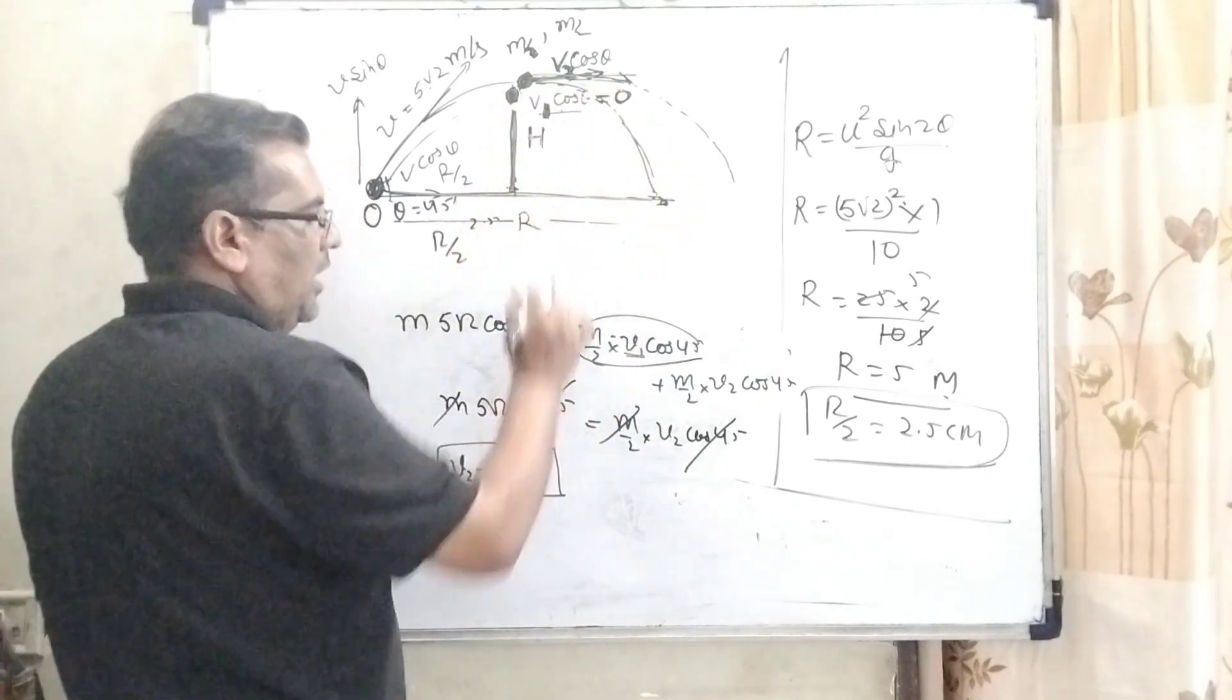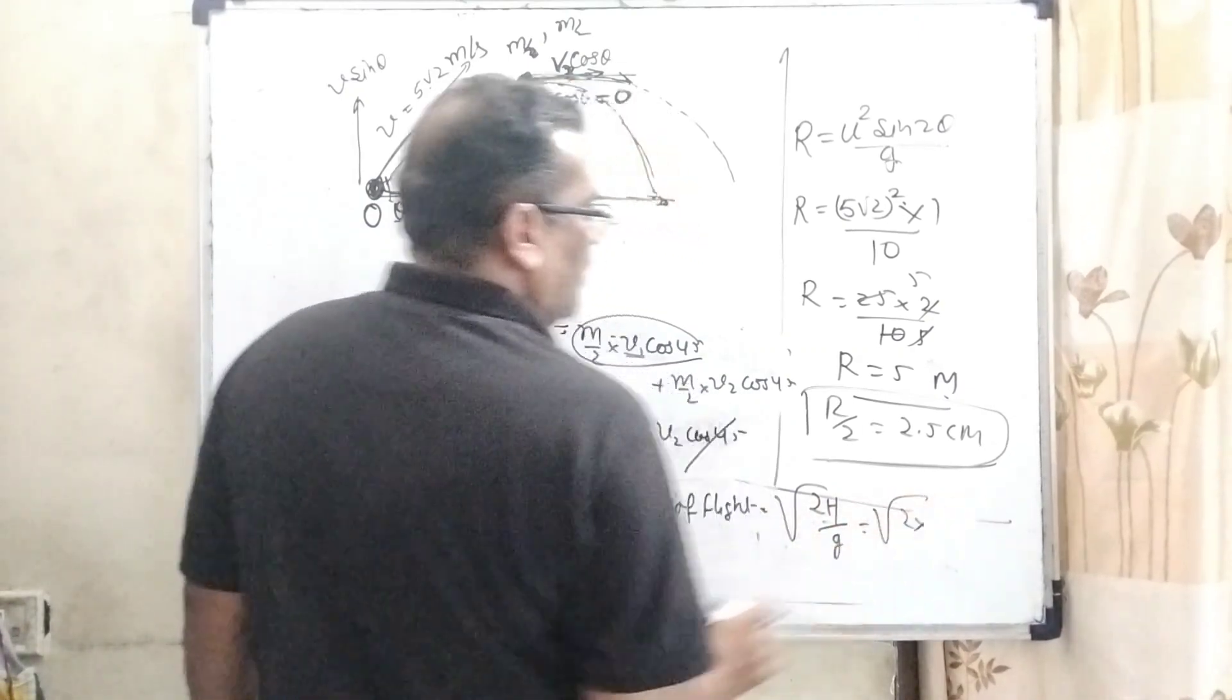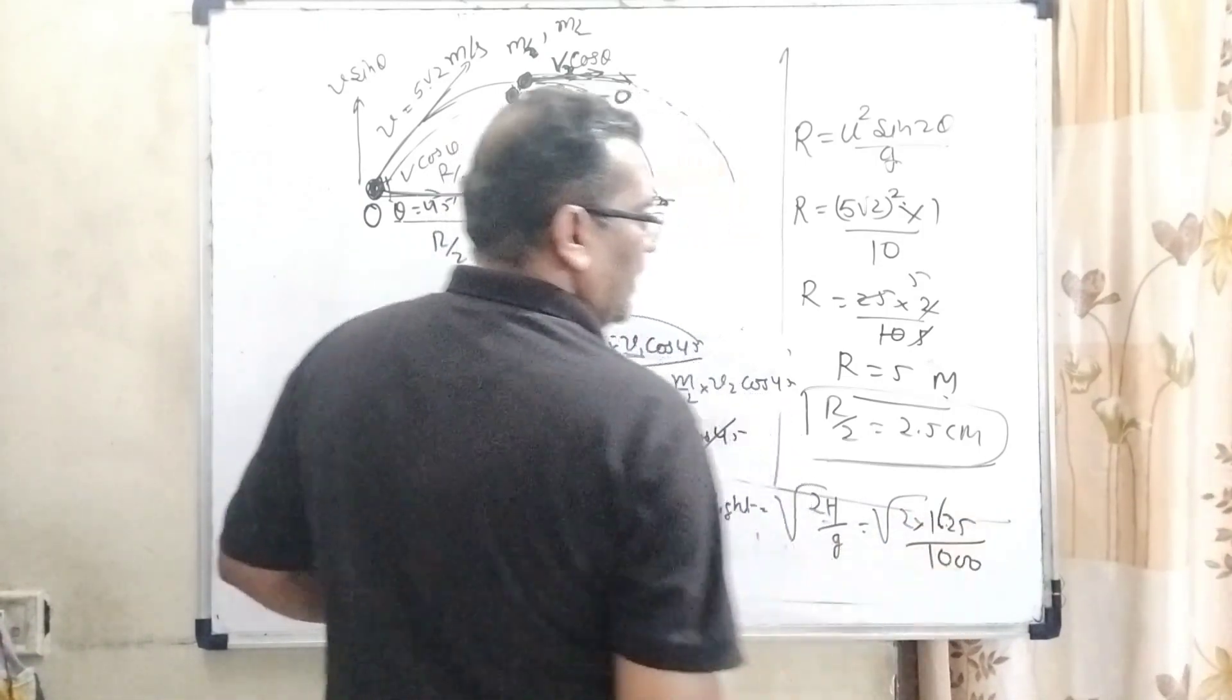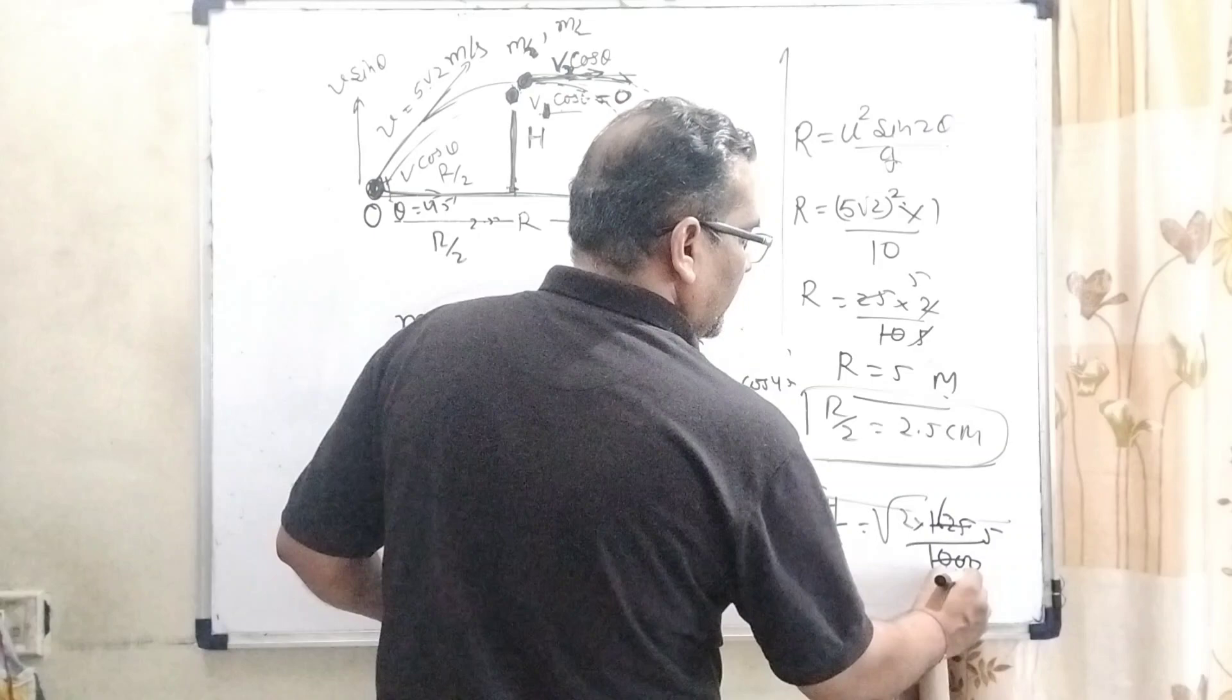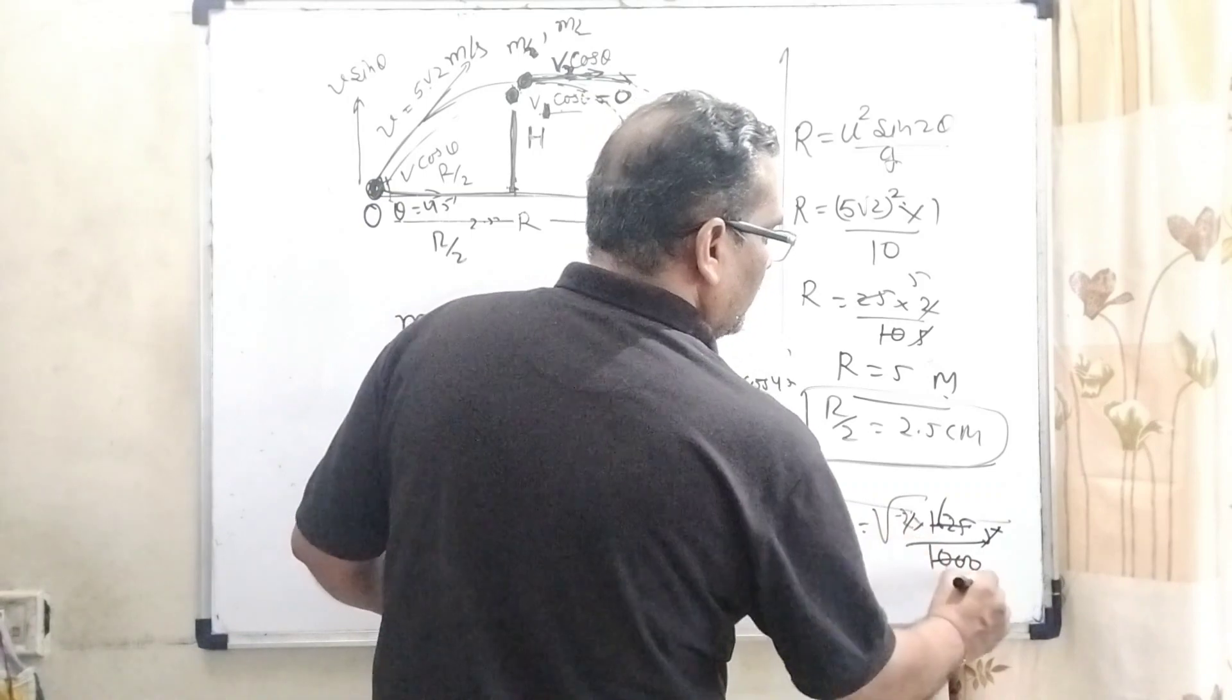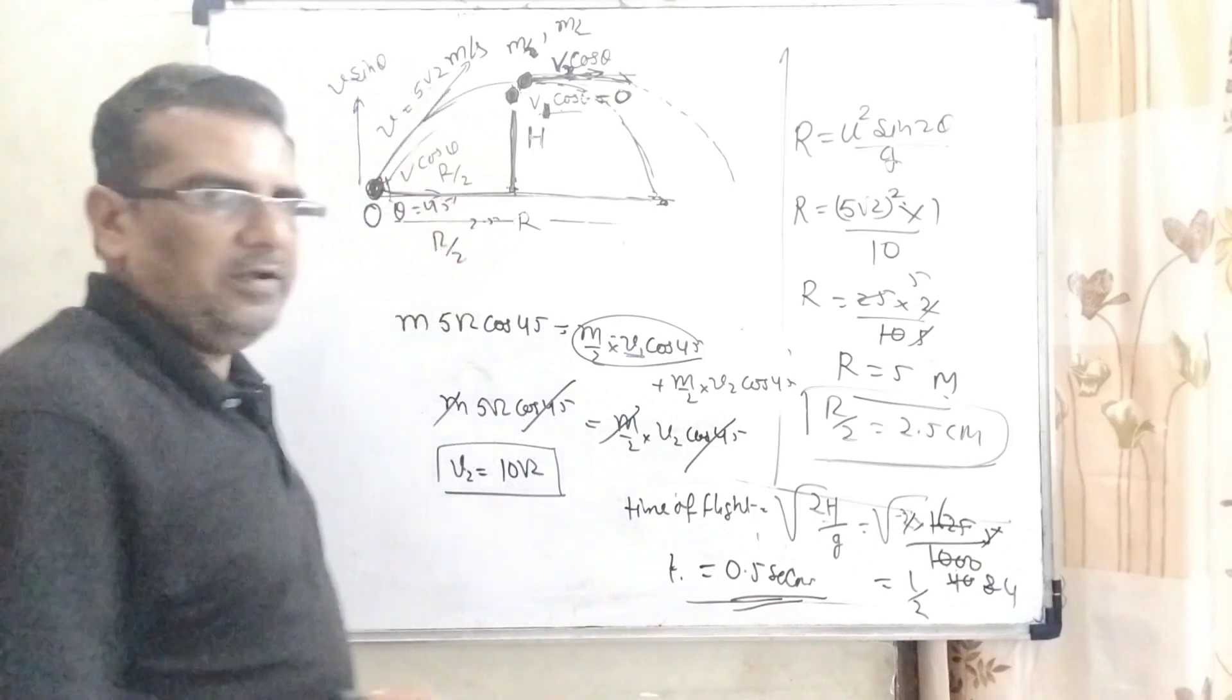Now we have to find out the time of flight. Time of flight = √(2h/g). Here 2h, we already found maximum height 1.25, so √(2 × 1.25 / 10). Removing the decimal, this becomes √(250/1000) = √(25/100) = √(1/4) = 1/2, which means 0.5 seconds. That is the time period. So first thing, we get the time of flight is 0.5 seconds.